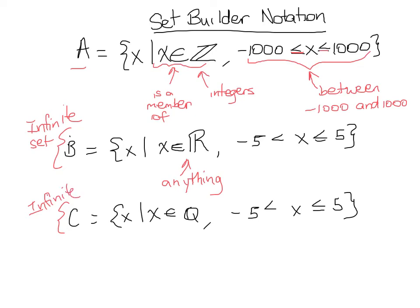But, again, let's say D were the natural numbers, natural numbers between, I'll use the same values so you can see the comparison here, between negative 5 and 5.